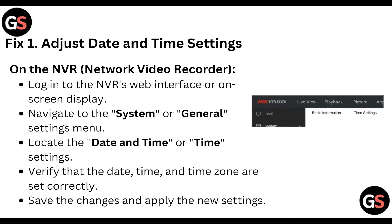First of all, adjust the date and time settings on the NVR (Network Video Recorder). Login to the NVR website and then navigate to the system or general settings menu. Locate the date and time, and verify that the date, time, and time zone are set correctly according to your area. Then save the changes and apply the new settings.